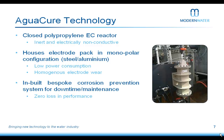A common problem with traditional electrocoagulation systems is that they can't control corrosion during downtime. For our systems we have a novel inbuilt corrosion prevention system which allows us to completely stop corrosion when we don't want it to happen. The benefit is that we don't lose any of our floc source — any of our anodes — during downtime, meaning when the electrodes are not in use but still sitting in water.